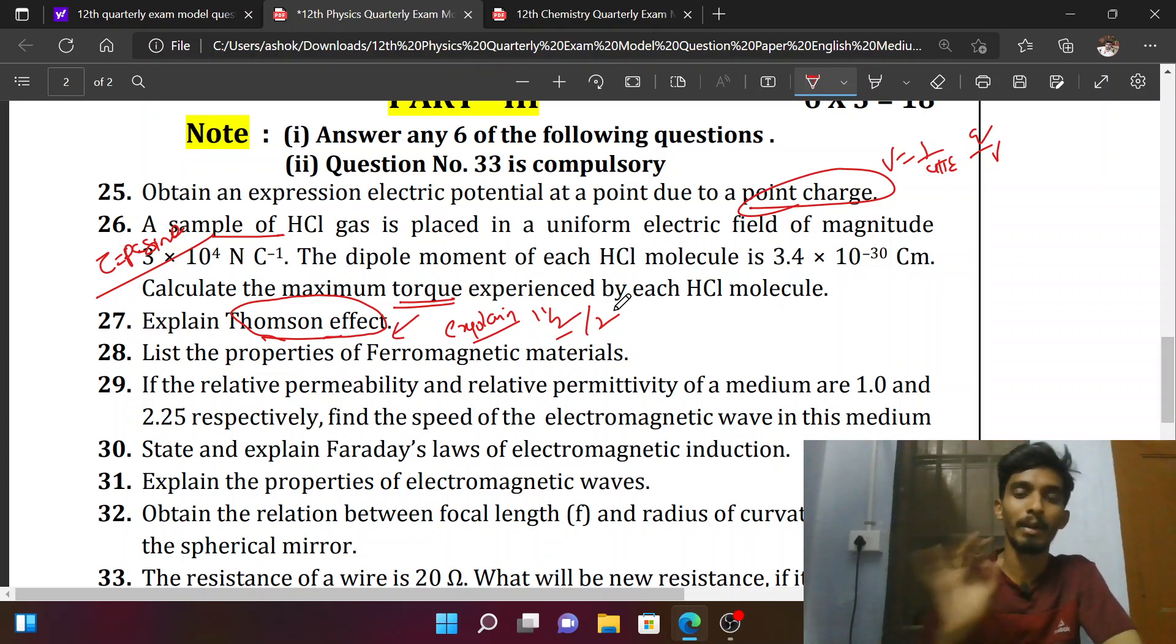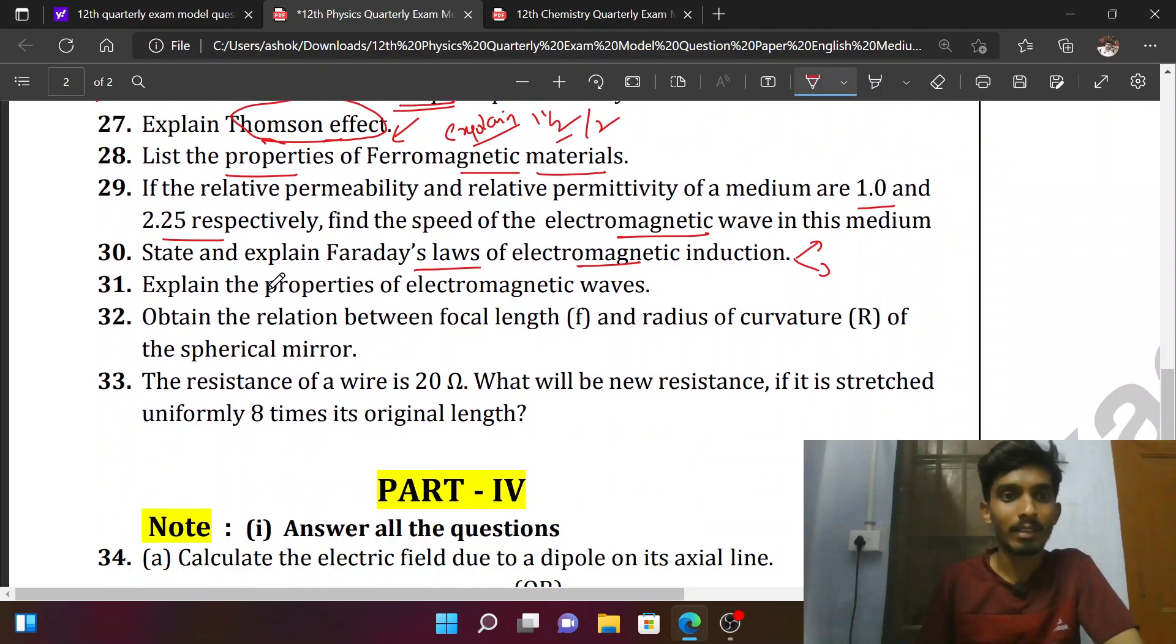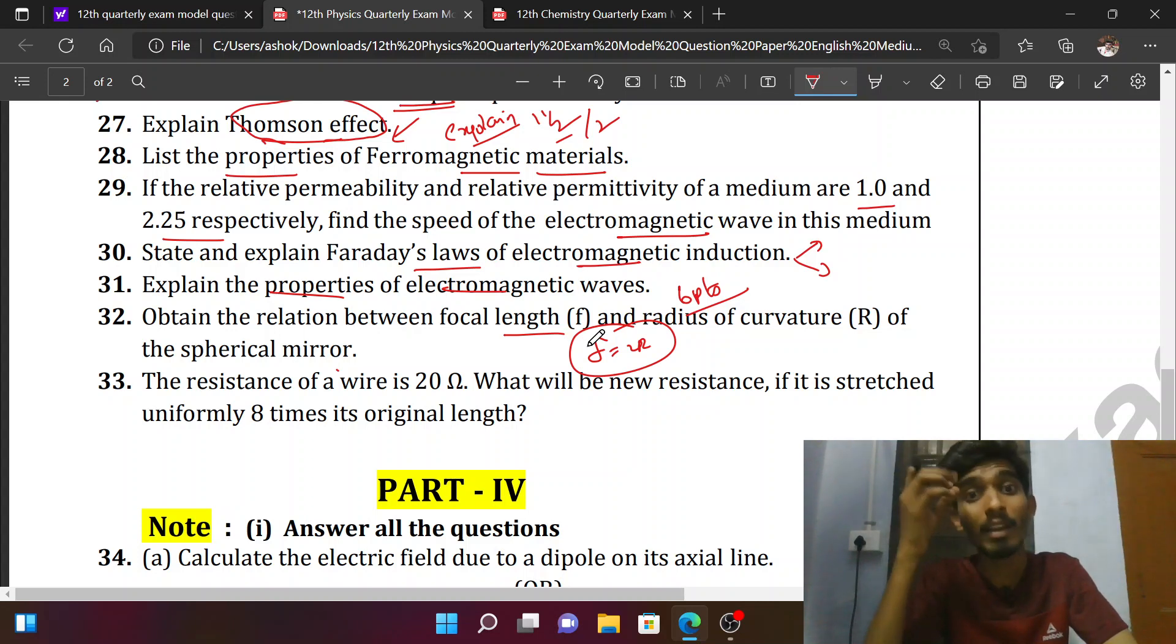You have to write the whole paragraph. List out the properties of ferromagnetic materials. Just write the properties point by point. What are the conditions? Point by point you have to write the definition and relative permeability. Speed of electromagnetics is very similar. State and explain Faraday's laws of electromagnetic induction. What are the properties of electromagnetics? The properties are 3 to the point. Write any diagrams. Cable length and radius, f is equal to 2.